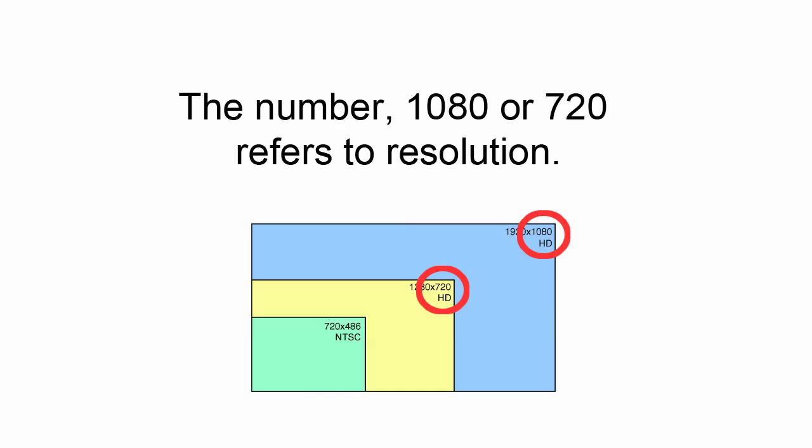Both the 1080 and 720 refer to an HD resolution. As you can see here, your old school TV had a resolution of 720 by 486 pixels, and it's the green box.